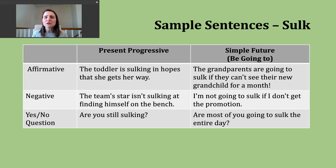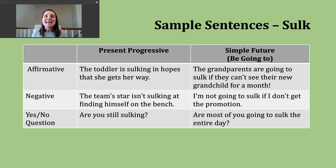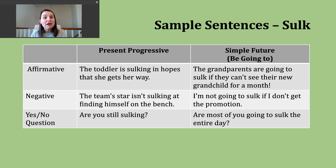So this toddler is in a mood until she gets whatever it is she wants. Now, if I want to make a negative present progressive sentence, I start with my subject, I use my form of be that matches that subject, then I use not, and then the -ing form of the verb. Here's another example.